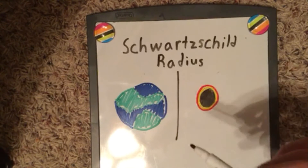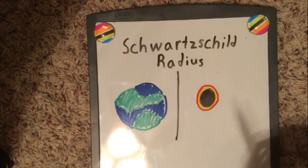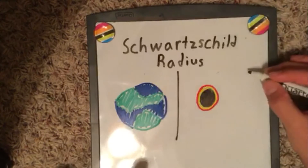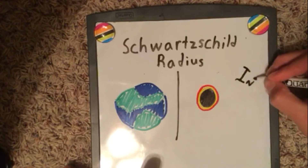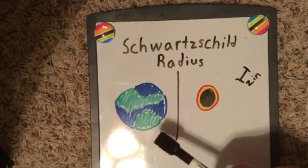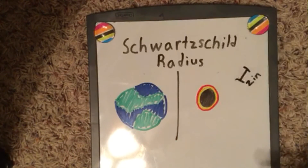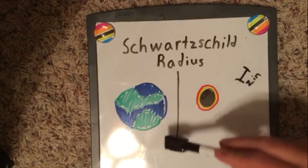The Schwarzschild radius is the area in which an object has to be compressed to make a black hole. So let's say that's a two-inch length — that is the area that the earth would have to be compressed to. The entire earth compressed into the size of two inches to become a black hole.